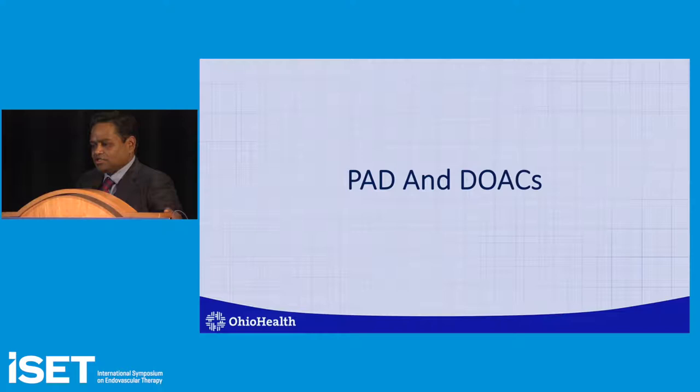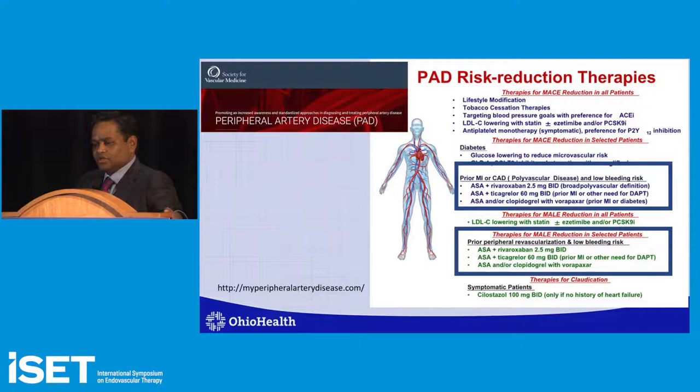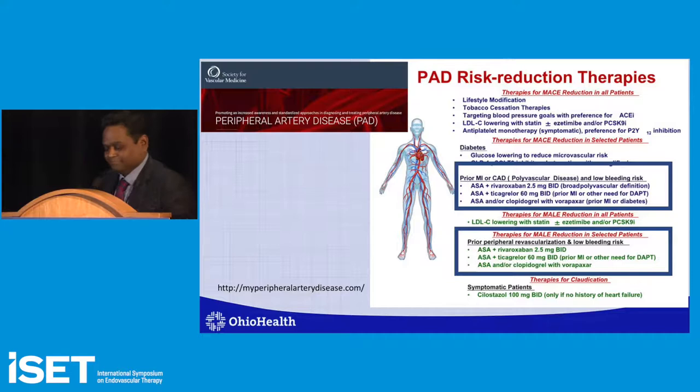The PAD and DOAC data was already discussed by Dr. Camarota. You can find additional resources at myperipheralarterydisease.com, a toolkit from the Society for Vascular Medicine. To summarize: use it in patients with polyvascular disease with low bleeding risk, or in patients where you want major adverse limb event reduction and they have low bleeding risk. Thank you.